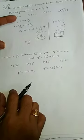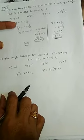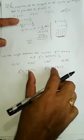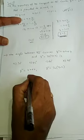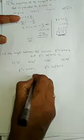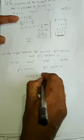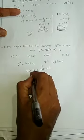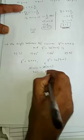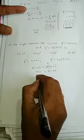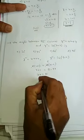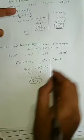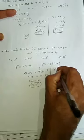Equating the two expressions for y², we get 4(x + 1) = 36 − x, which simplifies to 5x + 4 = 36 − x, giving 10x = 80, so x = 8.